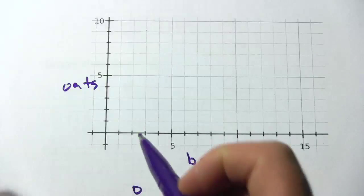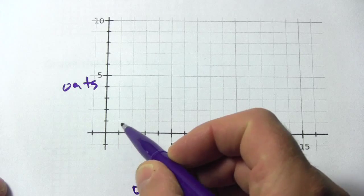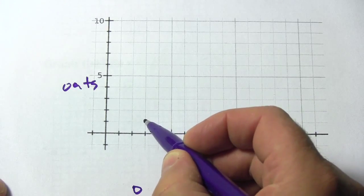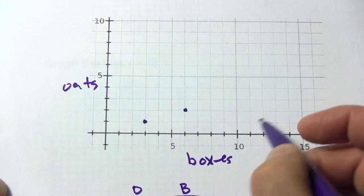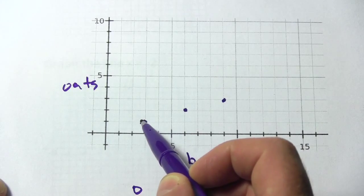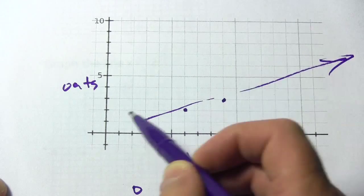So let's go ahead and graph those points: one and three, two and six, and three and nine. And so there is our line going like that.